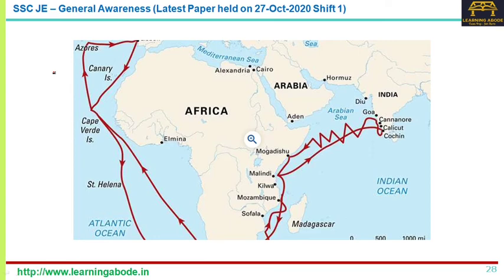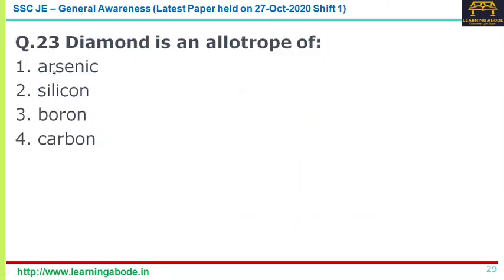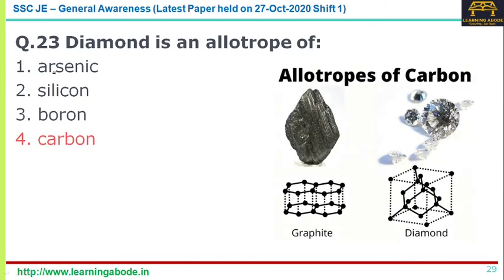Question twenty-three: diamond is an allotrope of arsenic, silicon, boron, or carbon? An allotrope is a structurally different form of the same element. The answer is carbon — option four. Carbon has two well-known allotropes: graphite and diamond.